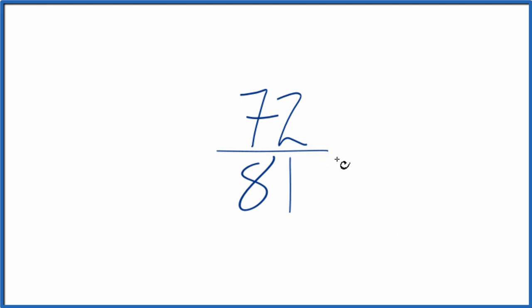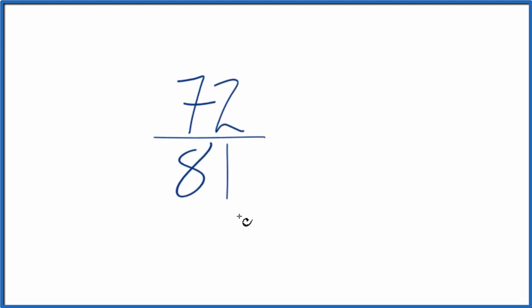To do that, we need to find a common factor, something that goes into 72 and 81 evenly, and we're looking for the greatest common factor. So these are the factors for 72 and 81.